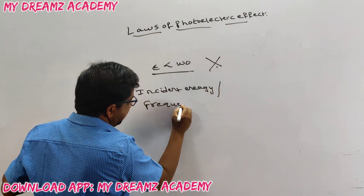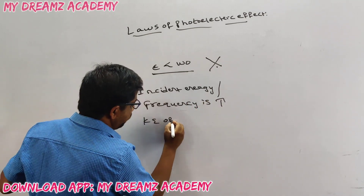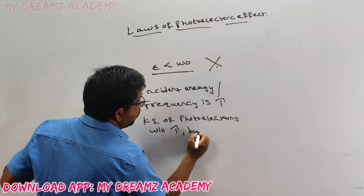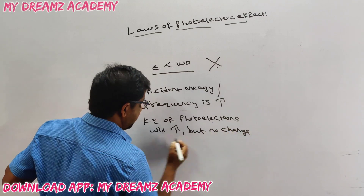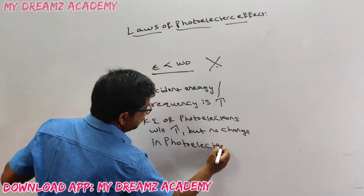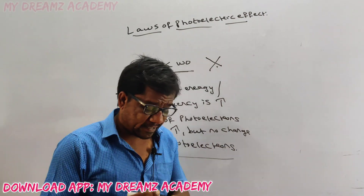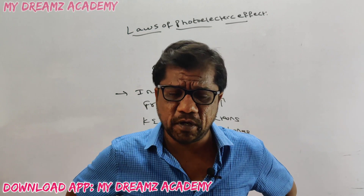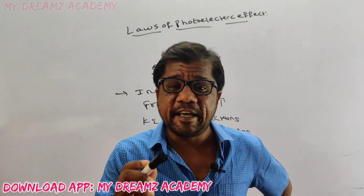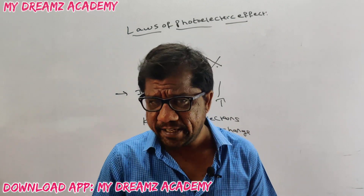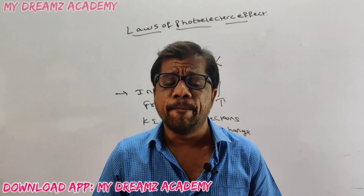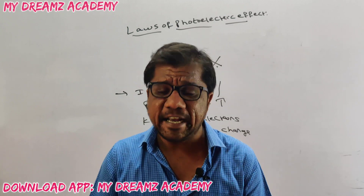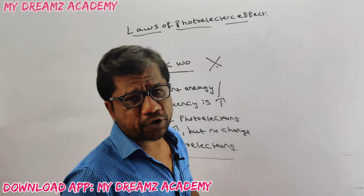Third and fourth laws are very important. If incident energy or frequency is increased, the kinetic energy of photoelectrons will increase — but there will be no change in the number of photoelectrons. So if you had 10 photoelectrons before, you still have 10; only their kinetic energy changes. Two or three regular questions have come in this context.